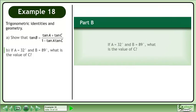Now we'll move on to Part B. If A equals 32 degrees and B equals 89 degrees, what is the value of C?